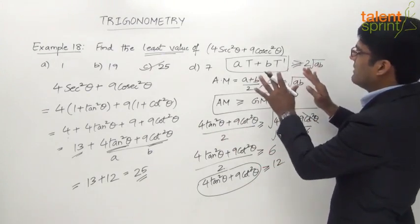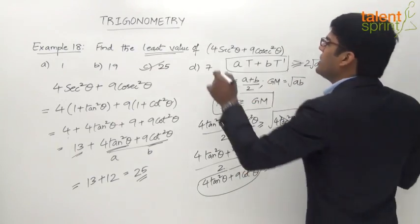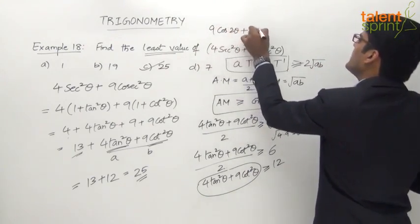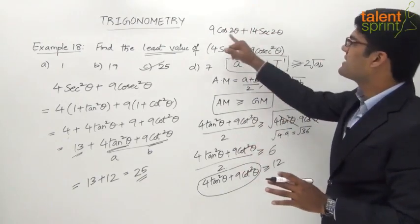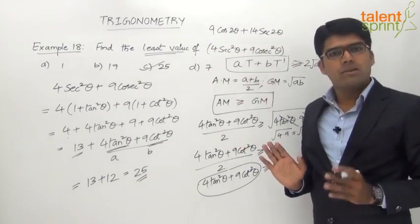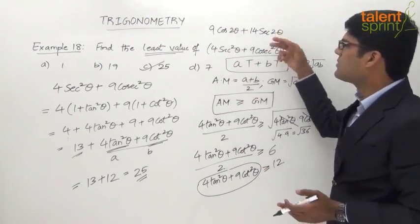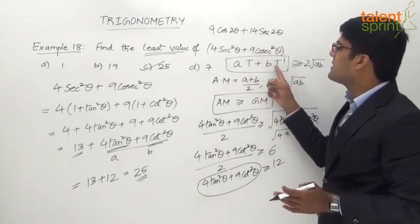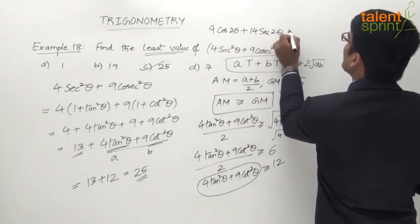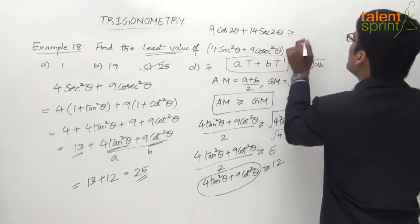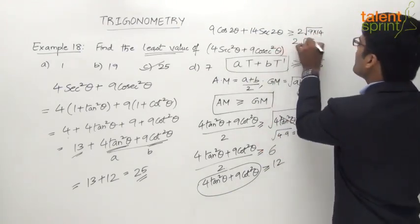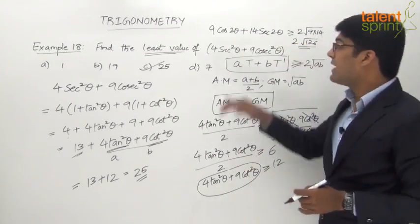For example: find the least value of 9cos2θ + 14sec2θ. Are cos2θ and sec2θ reciprocals? Yes — cos2θ = 1/sec2θ. So the reciprocal condition is satisfied. The minimum value is 2√(ab) = 2√(9 × 14) = 2√126. So the minimum value of 9cos2θ + 14sec2θ is 2√126.